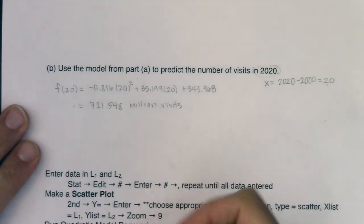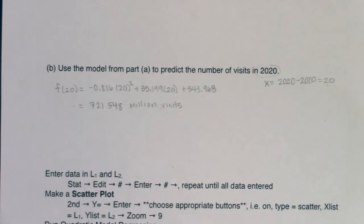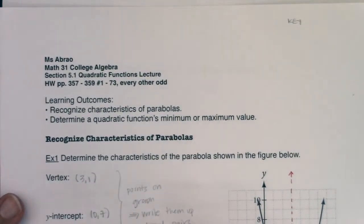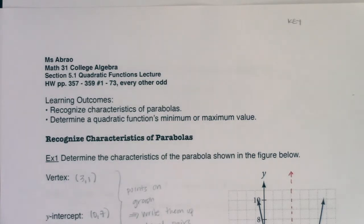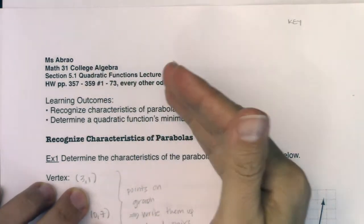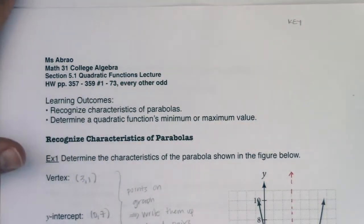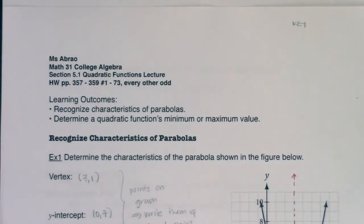That wraps up section 5.1. We've covered parabolas in detail — recall that chapter 4 focused on lines and section 5.1 focuses on parabolas. Moving forward in chapter 5, we'll go beyond linear and quadratic to look at cubics, quartics, and higher-degree polynomials. See you in a few!